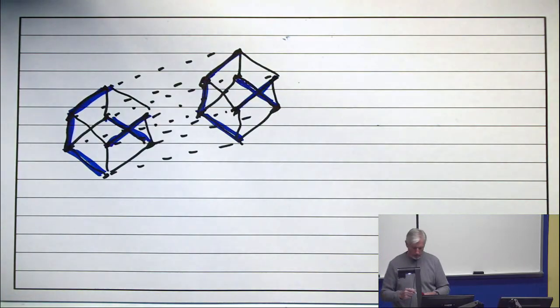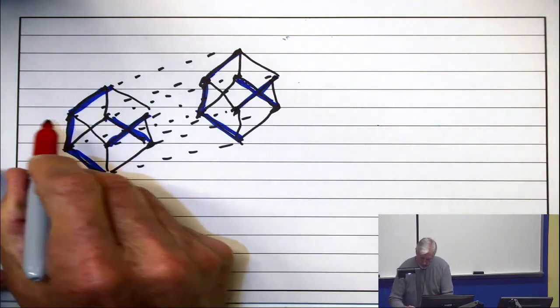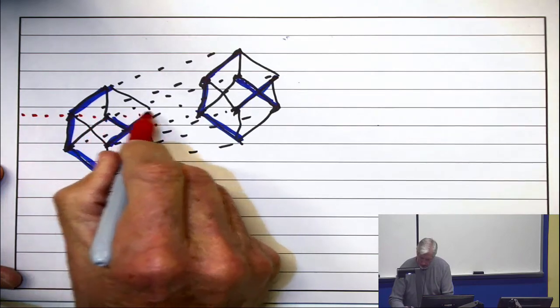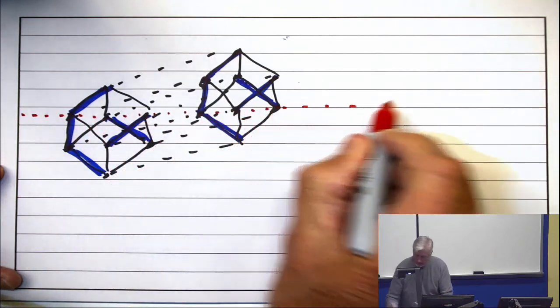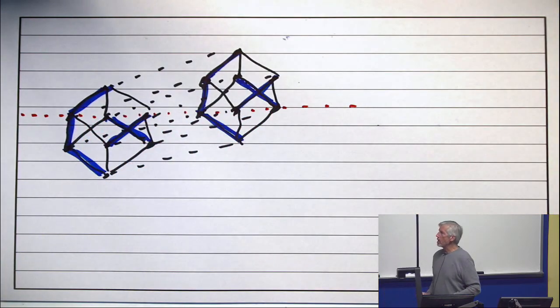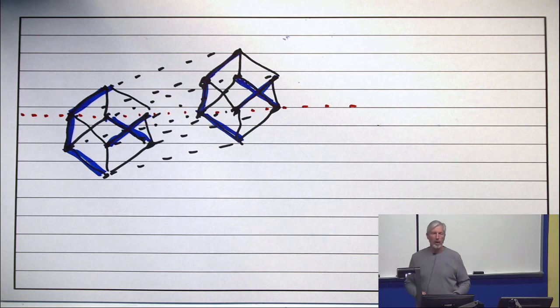All right, now, where is the middle level? The middle level is right here. So none of the chains are symmetric about the middle.